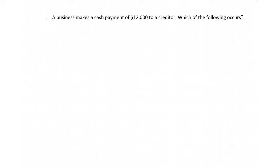Okay, a business makes a cash payment of $12,000 to a creditor, which of the following is correct. You have your answers.